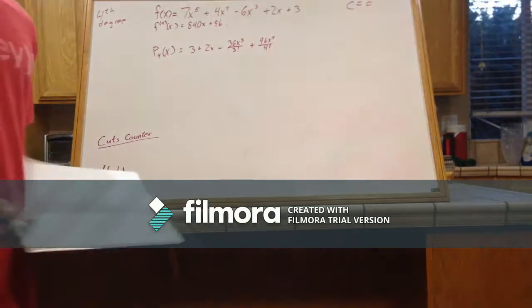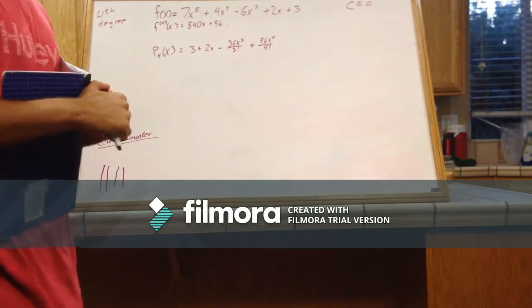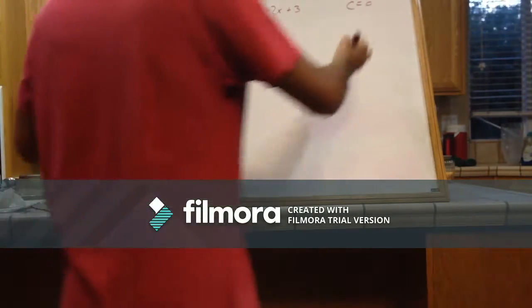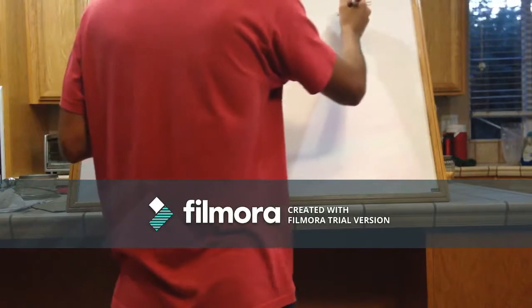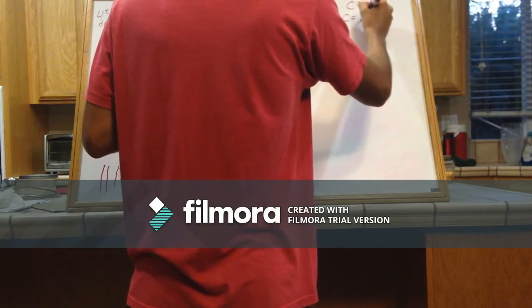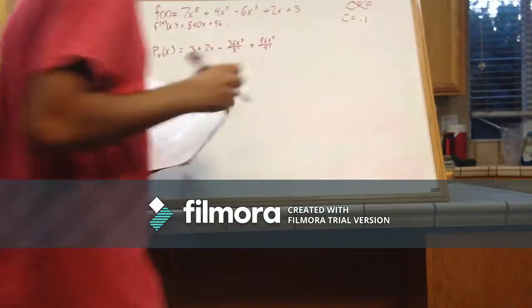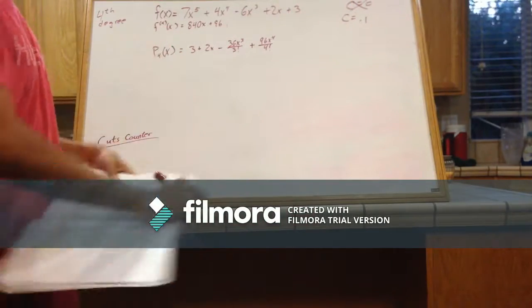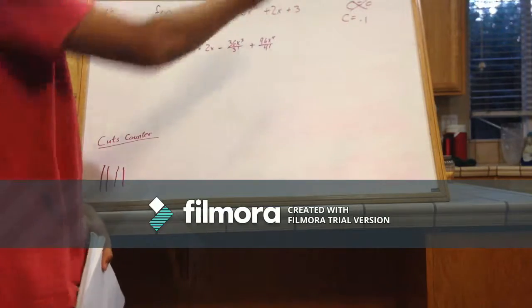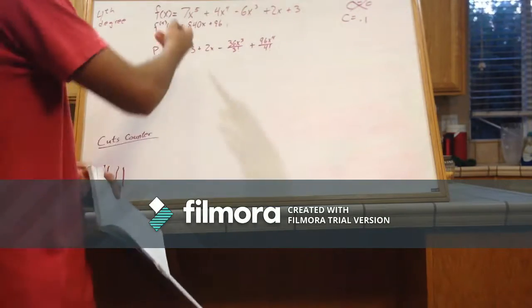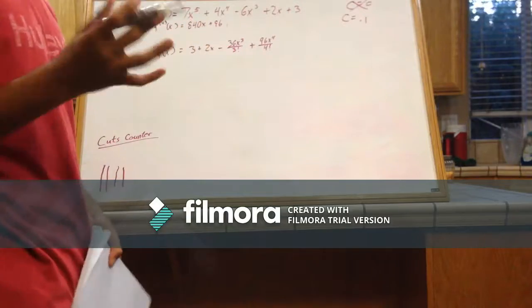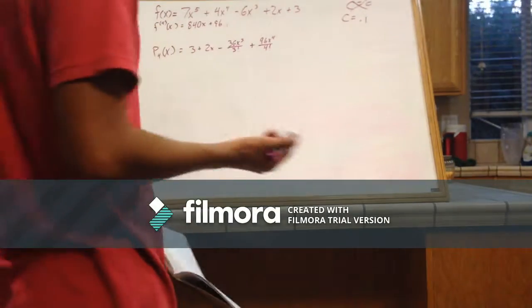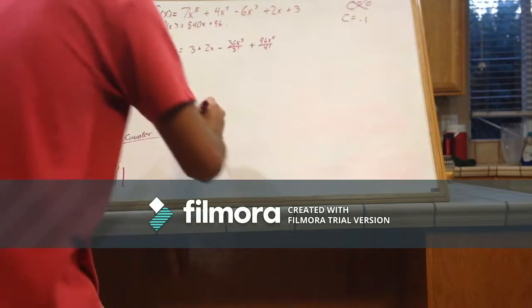Alright, so next we're doing the Lagrange part, where we find the remainder, and we will try approximating at point one. So we centered it at zero, but now we're going to approximate at point one, so we're going to do that right now. So just a reminder, this is our fourth-degree Taylor polynomial, this is our original function that we were given, and then this here was just the fourth degree. I kept it on there because we'll need it for this. So once again, we'll remind ourselves of the equation for the Lagrange part of the remainder.